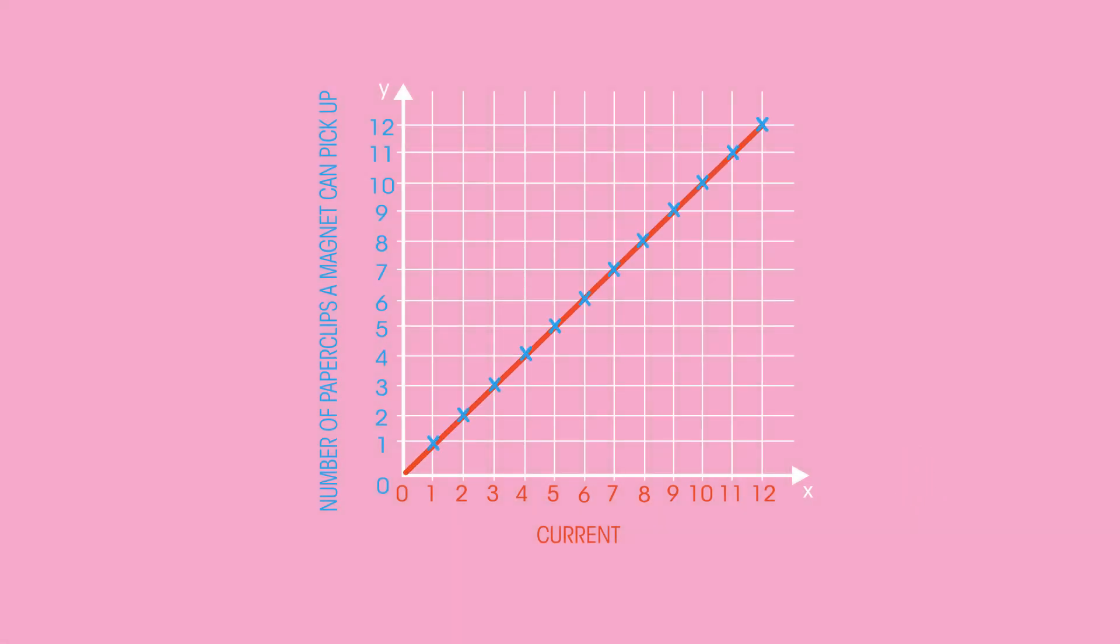They also both increase together. As the current increases, the strength of the magnet increases, and so it can pick up more paper clips.